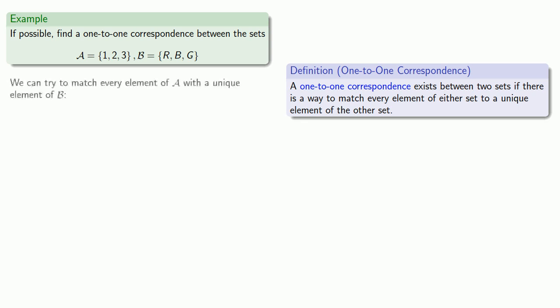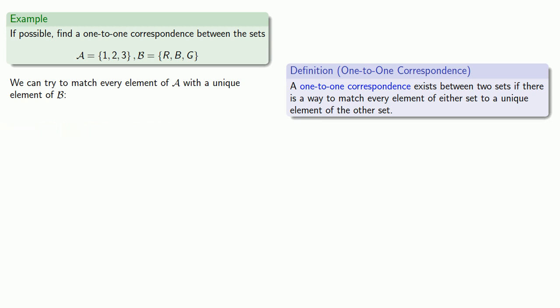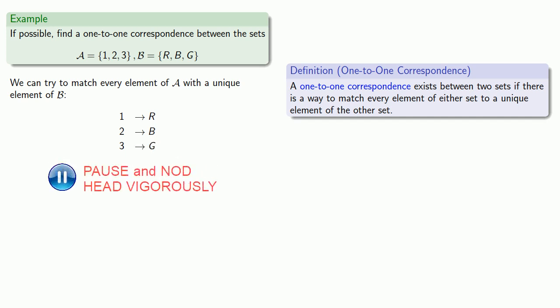We can try to match every element of A with a unique element of B. Let's match up the elements and see what happens. We can match one to R, two to B, and three to G. And so we've matched every element of A with a unique element of B.